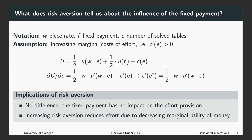What does risk aversion tell us about the influence of the fixed payment? Let us first introduce some notation. Let W denote the piece rate, F the fixed payment, and E the number of solved tables.